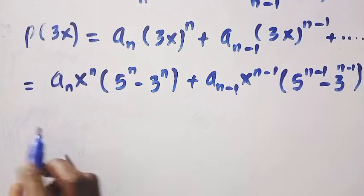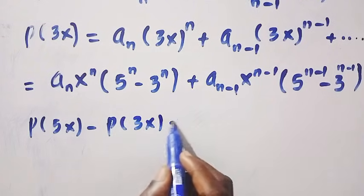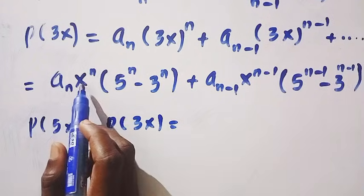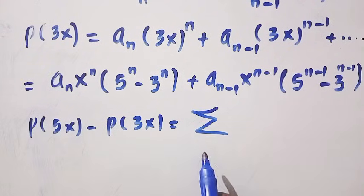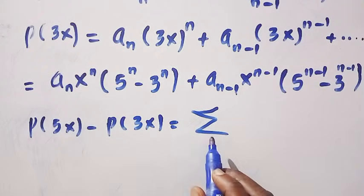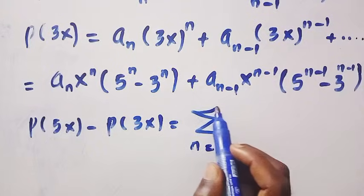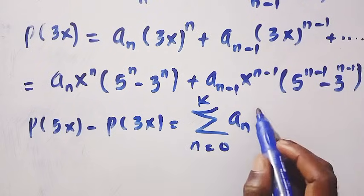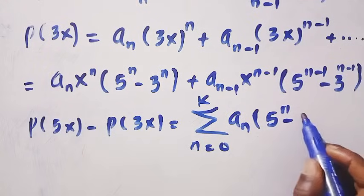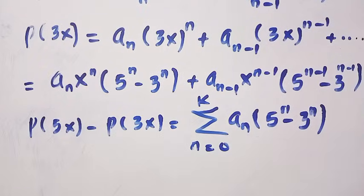So in general terms, P(5x) minus P(3x) can be written as the summation from n equals 0 to k of a_n x^n times (5^n minus 3^n). So this keeps going — we can test for a_0, a_1, a_2, as many terms as we need.